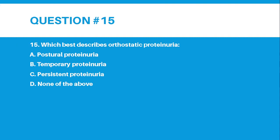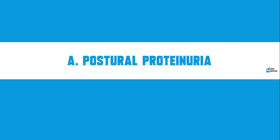Number 15. Which best describes orthostatic proteinuria? A. Postural proteinuria, B. Temporary proteinuria, C. Persistent proteinuria, or D. None of the above. The correct answer for number 15 is letter A — Postural proteinuria.